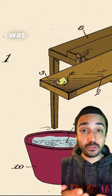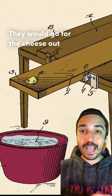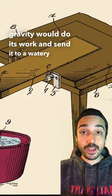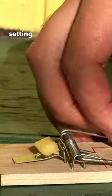This one from 1932 was essentially walking the plank for rats. They would go for the cheese out on the board, gravity would do its work and send it to a watery grave. Meant to be more cost efficient and less dangerous than setting traditional traps.